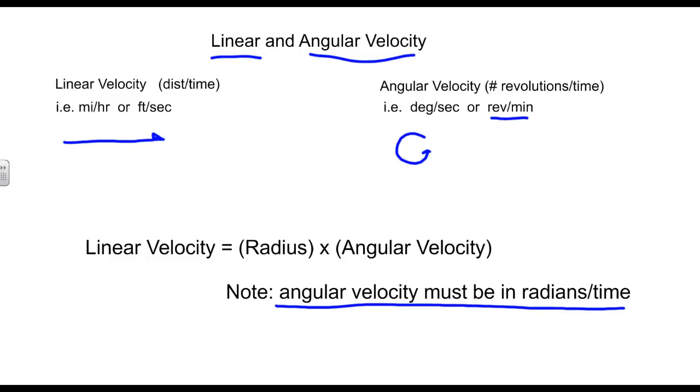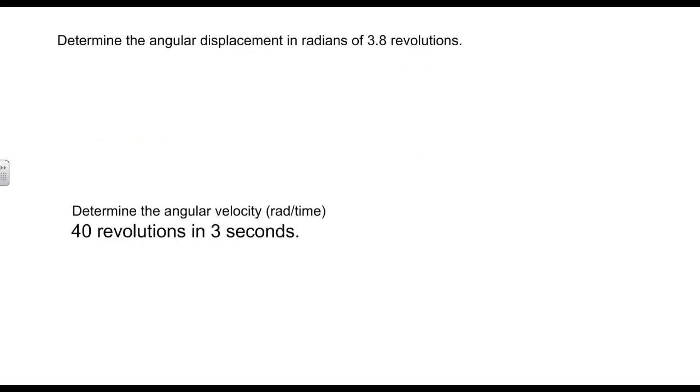Let's take a look at a couple examples here. We want to determine the angular displacement in radians of 3.8 revolutions. So basically, if I go one time, two times, three times, and eight-tenths of a revolution, what measure in radians have I covered? Well, if I've gone three times around, I better be over 6 pi. So anyways, let's grind through that.